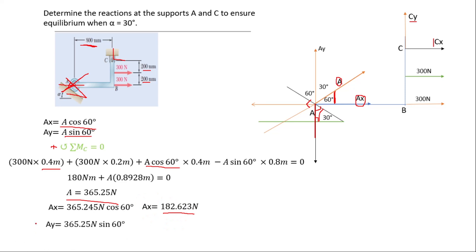And for Ay: Ay = 365.25 × sin 60°, which gives Ay = 316.31 newtons. So we have now correctly determined our reactions at A: Ax = 182.623 N and Ay = 316.31 N.